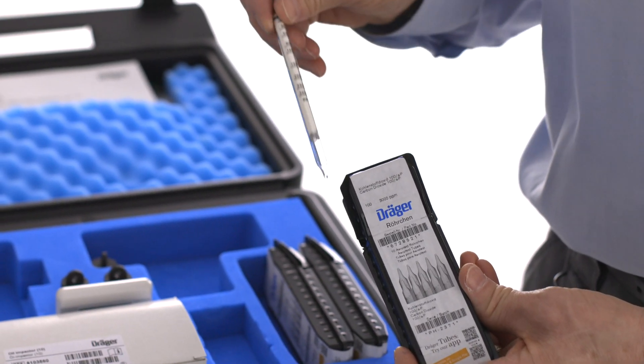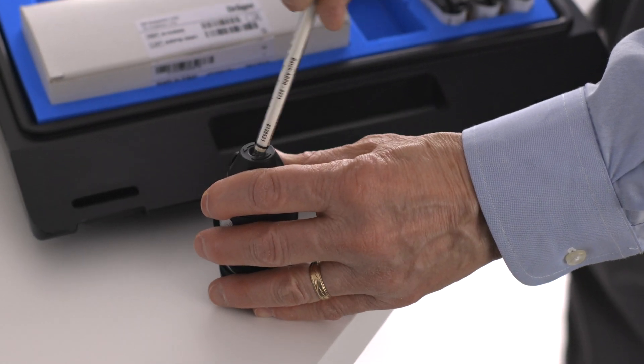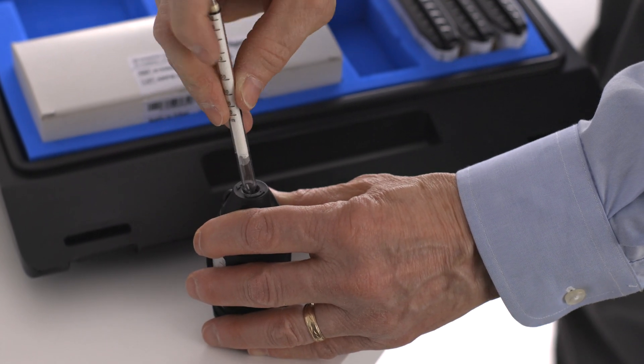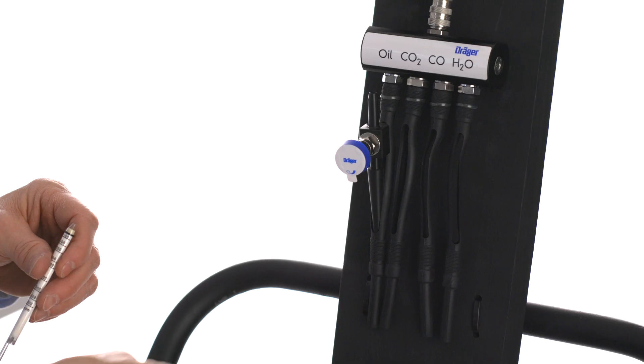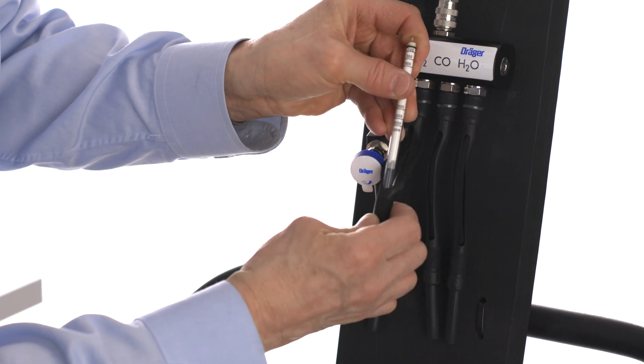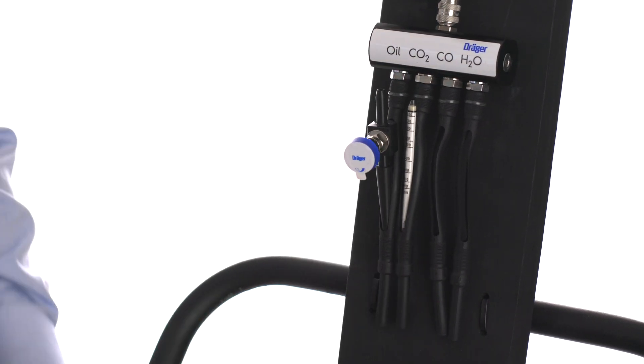Select one of the carbon dioxide tubes from the case. Score and snap off the tips using the tube opener. The arrow on the tube indicates the direction of airflow. Insert the tube into the bottom of the correct holder, leaving the top part disconnected for now.